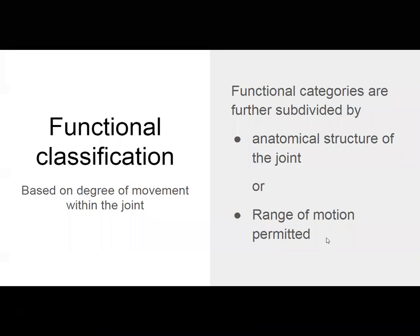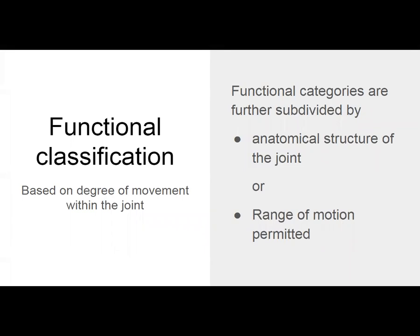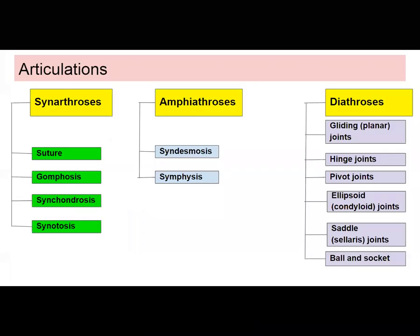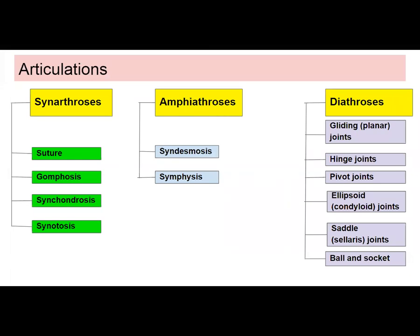If we're going to classify articulations functionally, it's based on how much movement you get in that joint. You can subdivide functional categories based on structure and range of motion. The big categories in functional classification are synarthroses, amphiarthroses, and diarthroses.